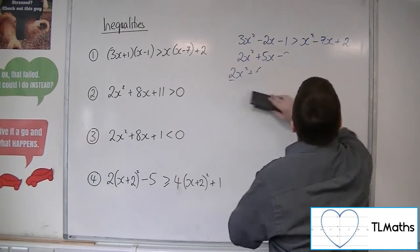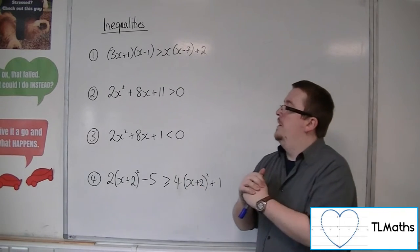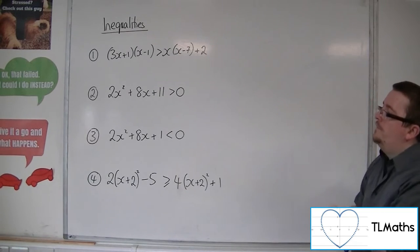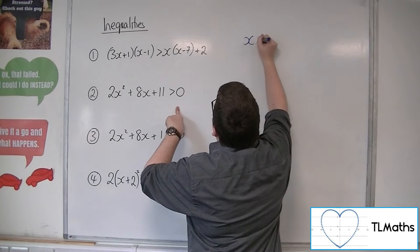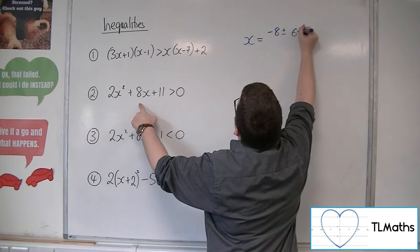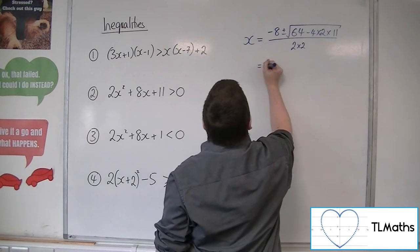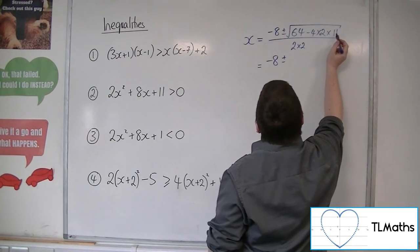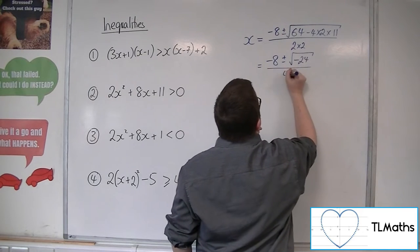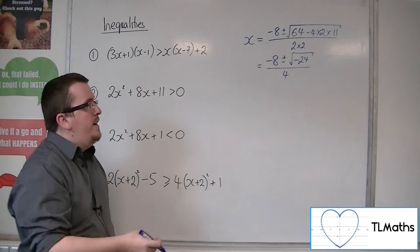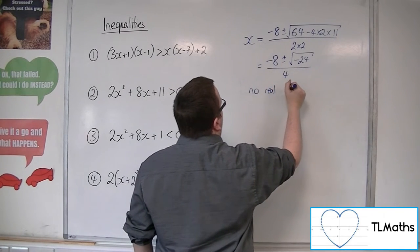Moving on to number 2: we have 2x squared plus 8x plus 11 is greater than 0. Because this is a more complicated one, there must be some trick to it. Let's use the quadratic formula to find where the quadratic equals 0. We get minus 8 plus or minus the square root of 64 minus 88, all over 4. That gives us the square root of minus 24 in the numerator, so there are no real roots.